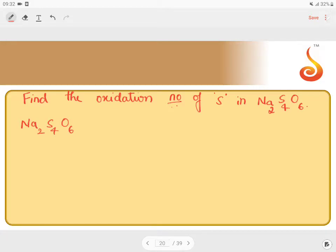So it is 2 times sodium, which is an alkali metal with oxidation number +1, plus 4 sulfur atoms (4x), plus 6 oxygen atoms at -2 each, equals 0. Therefore, 2 + 4x + 6(-2) = 0, which gives 2 + 4x - 12 = 0.